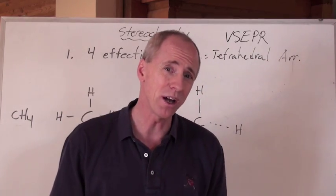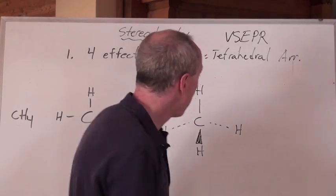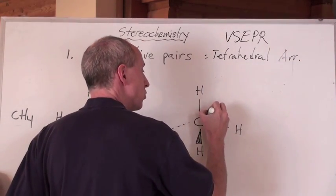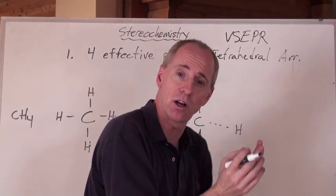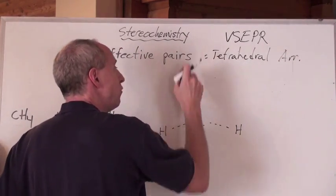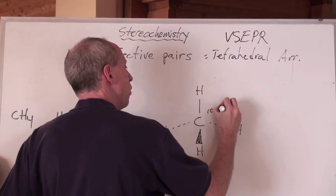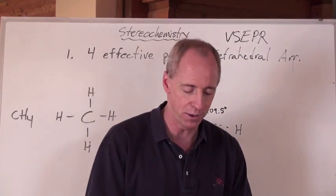And that right there is called tetrahedral. And you know what you really do have to know as well? No kidding. The bond angles, of course, aren't 90. They're actually this. For a tetrahedral, when you have four atoms around the central here, one, two, three, four effective pairs of electrons, you actually have a 109.5 degree bond angle. You've got to memorize that one.